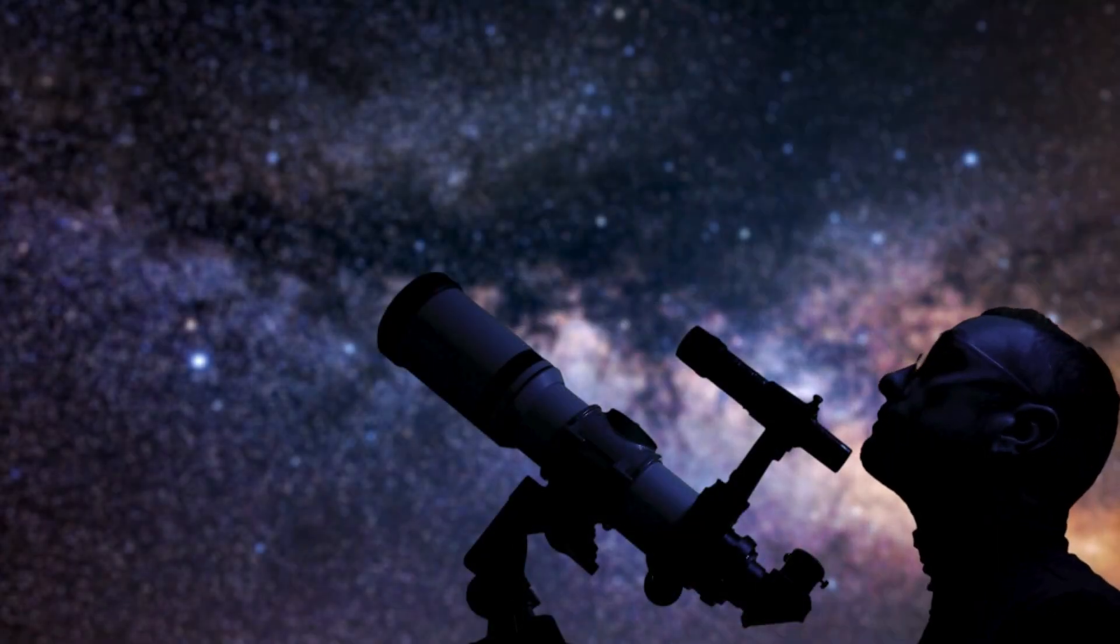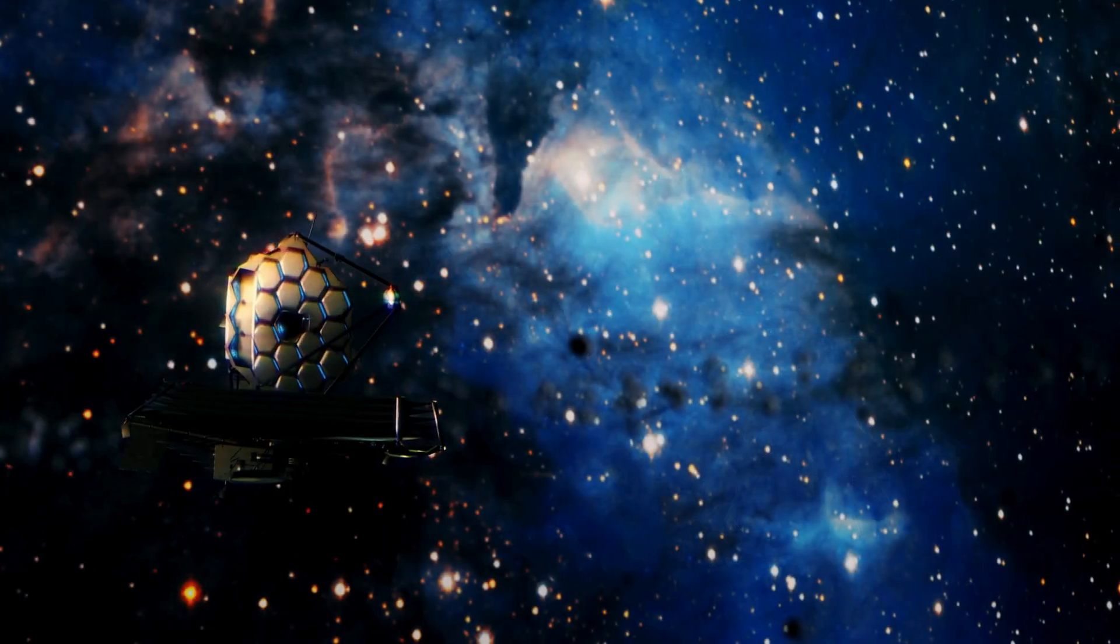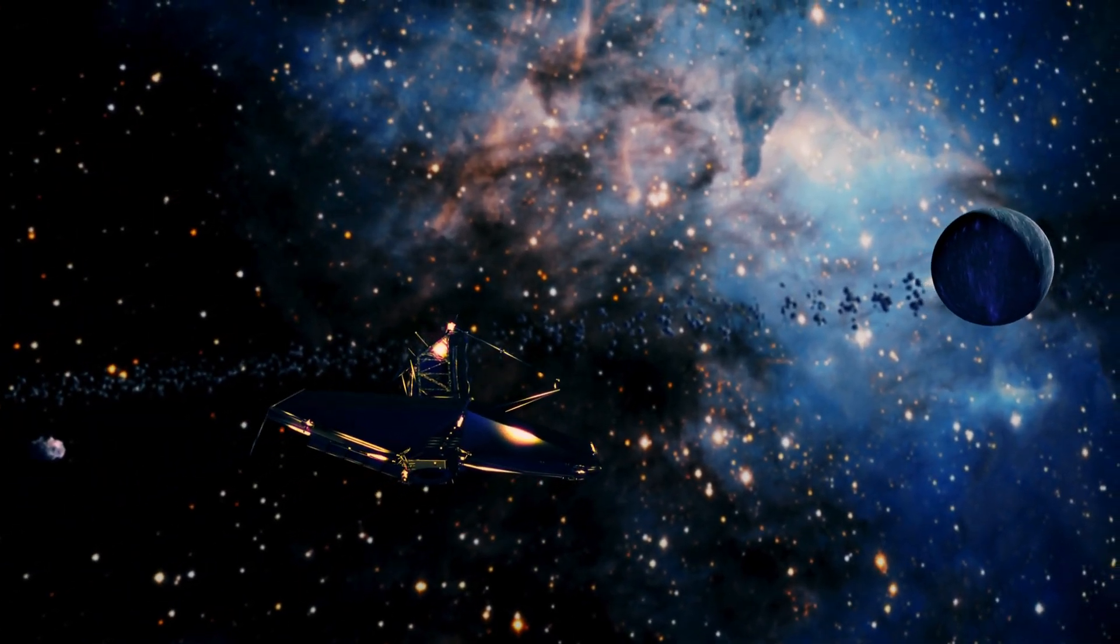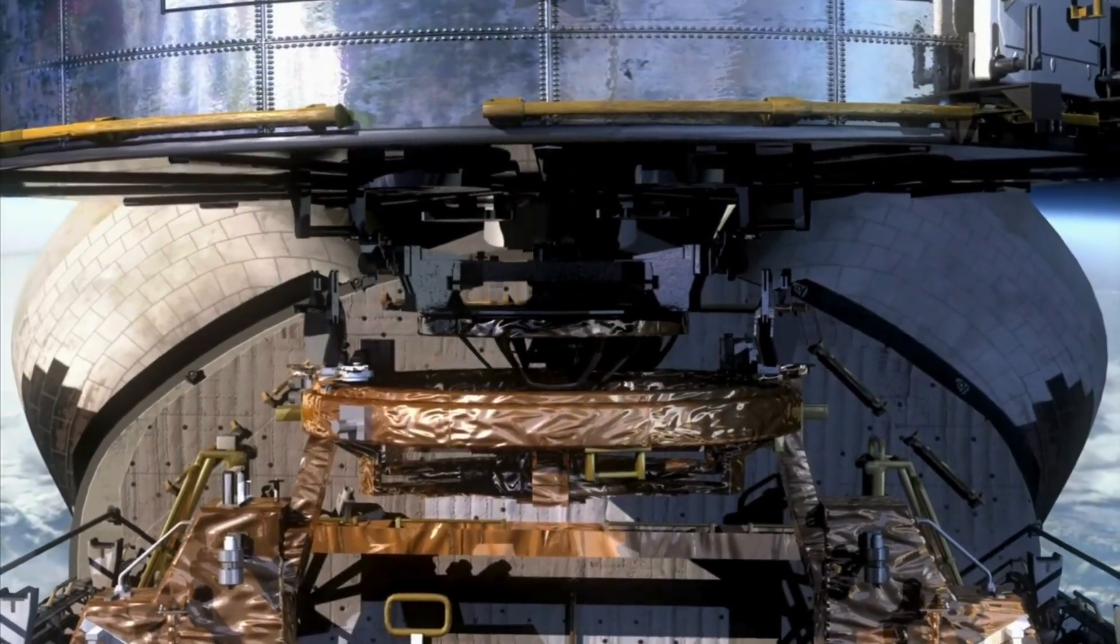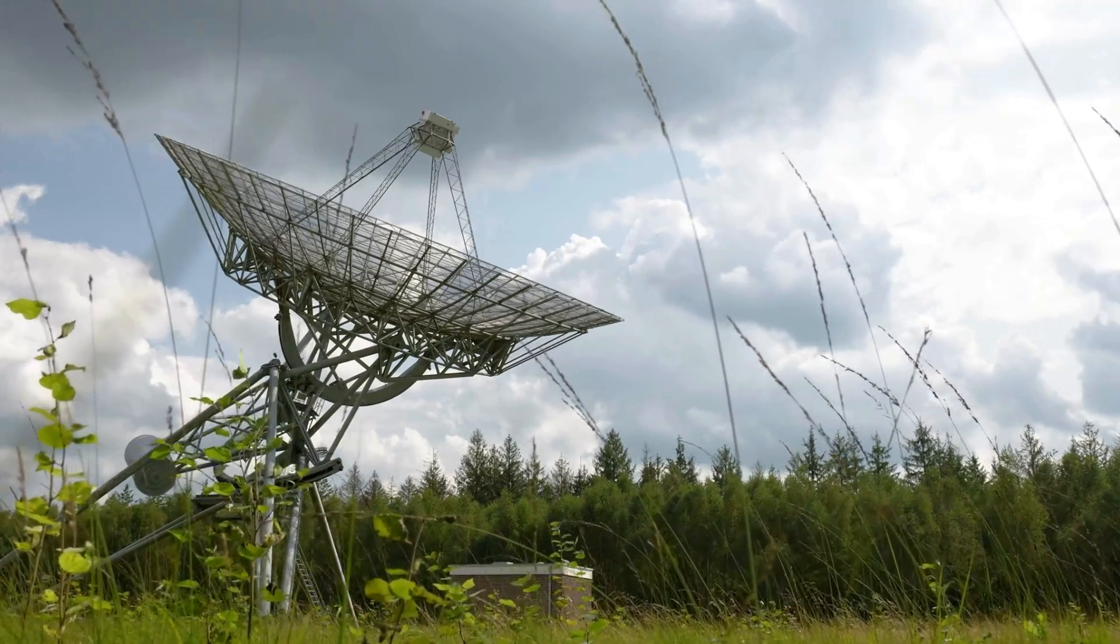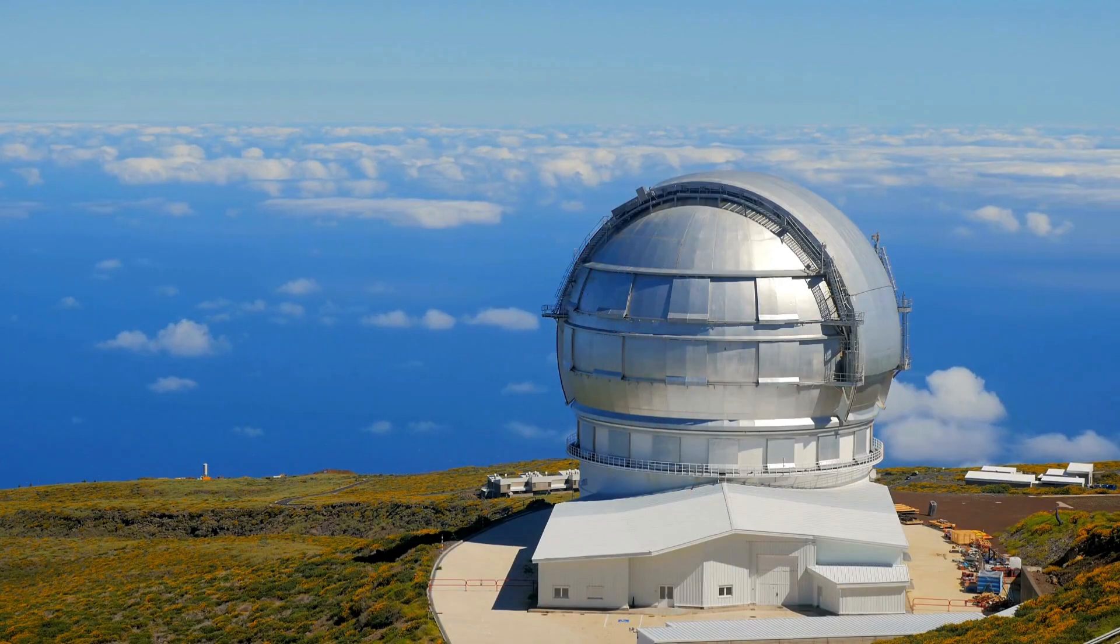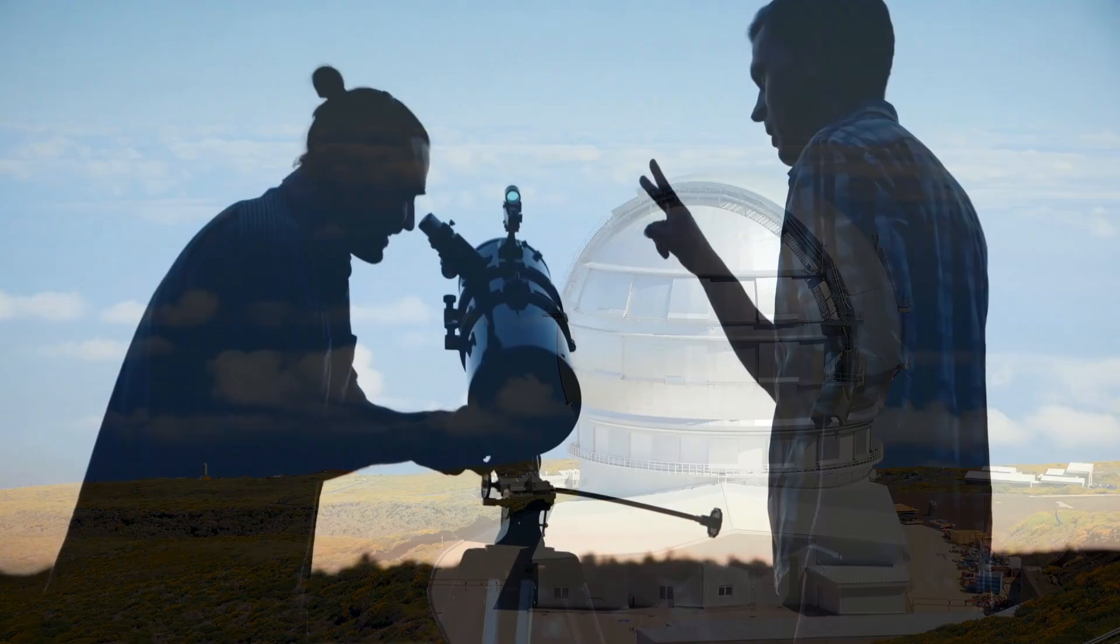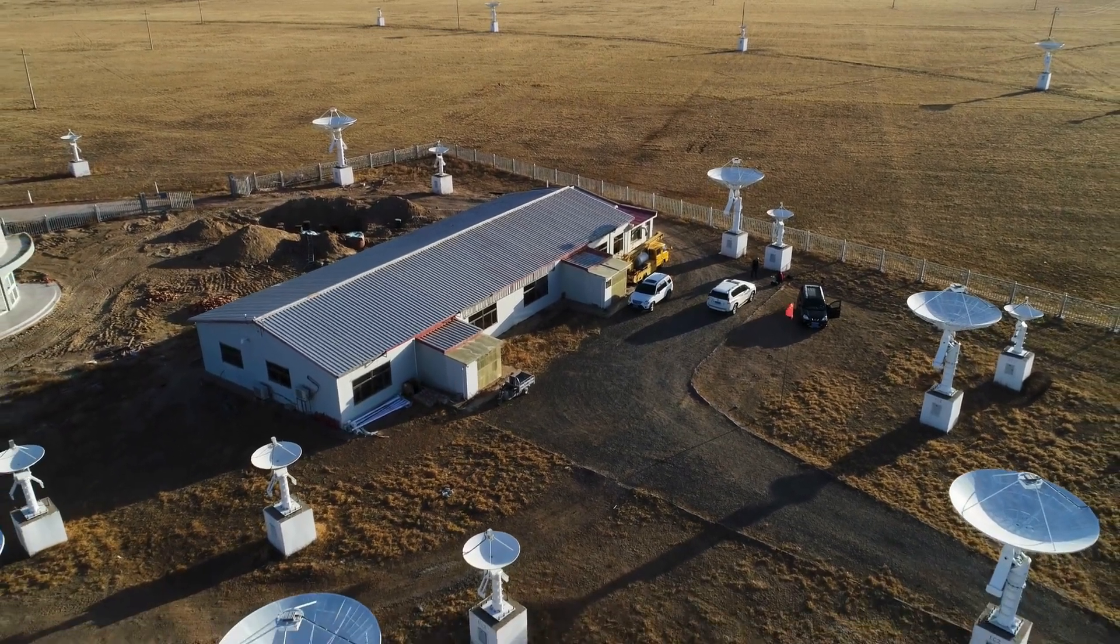The precision required for these innovations is staggering. The alignment of a Starshade, for instance, must be accurate to fractions of a millimeter over vast distances, a feat that pushes the boundaries of engineering. Yet the rewards are equally monumental. By observing exoplanets in the habitable zones of their stars, where liquid water and life might exist, these tools could uncover biosignatures that point to biological processes.